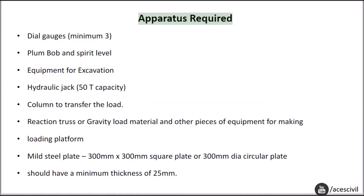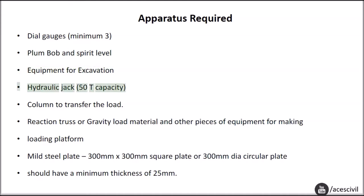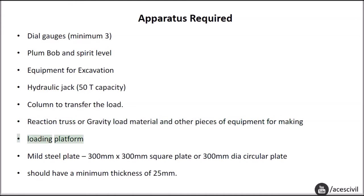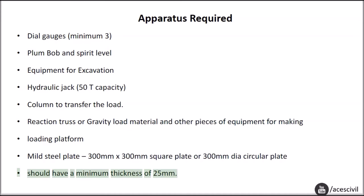Apparatus required: dial gauges (minimum 3), plumb bob and spirit level, equipment for excavation, hydraulic jack (50-ton capacity), column to transfer the load, reaction truss or gravity load material and other equipment for making a loading platform, and a mild steel plate of 300 mm x 300 mm square or 300 mm diameter circular, with a minimum thickness of 25 mm.